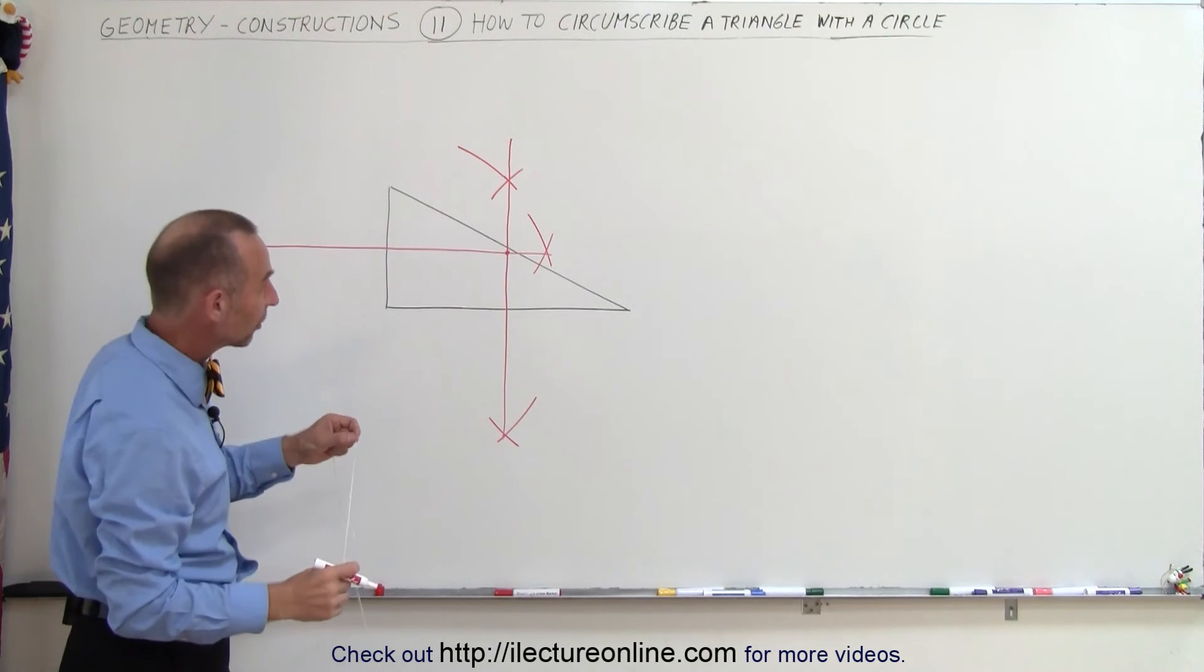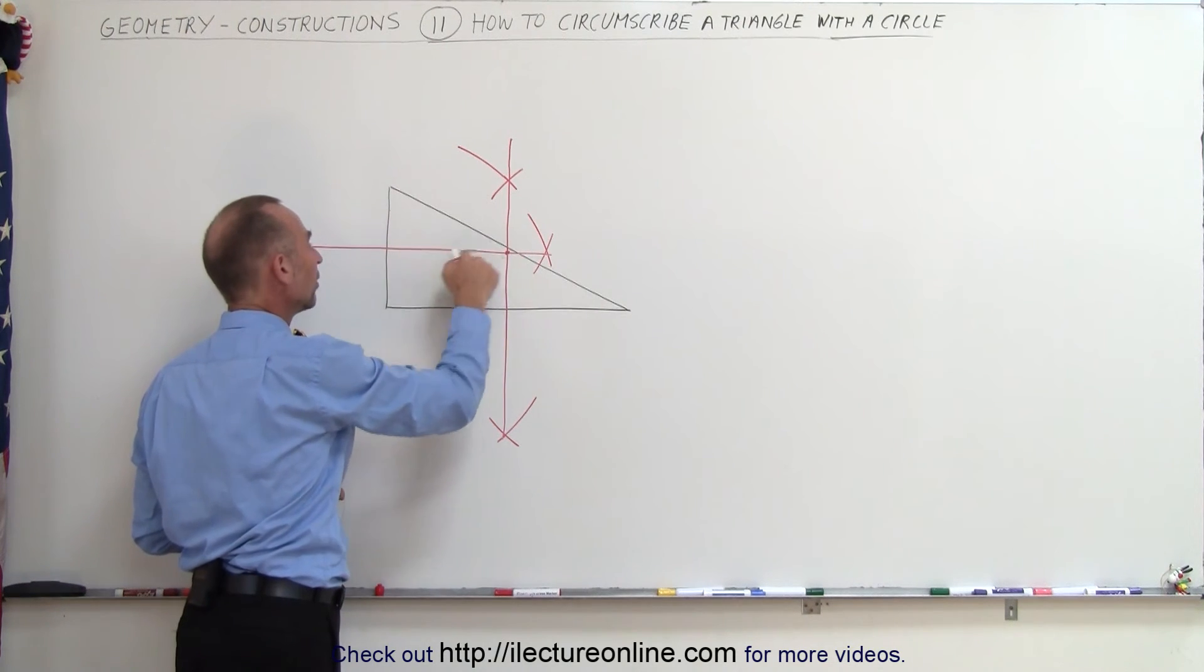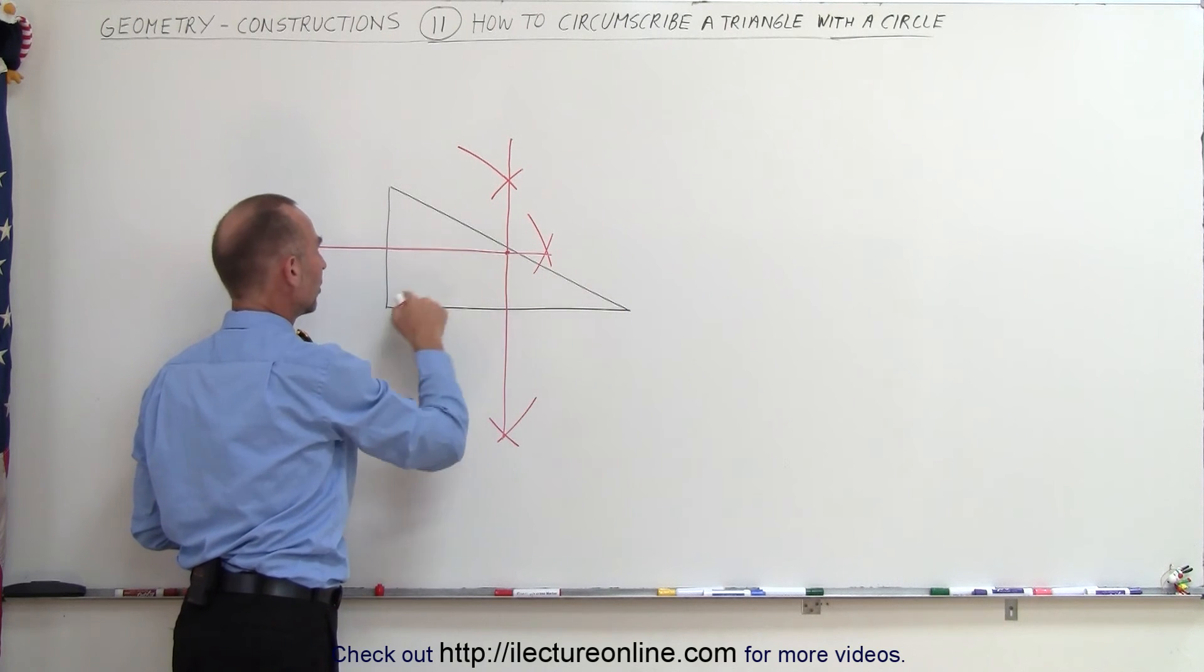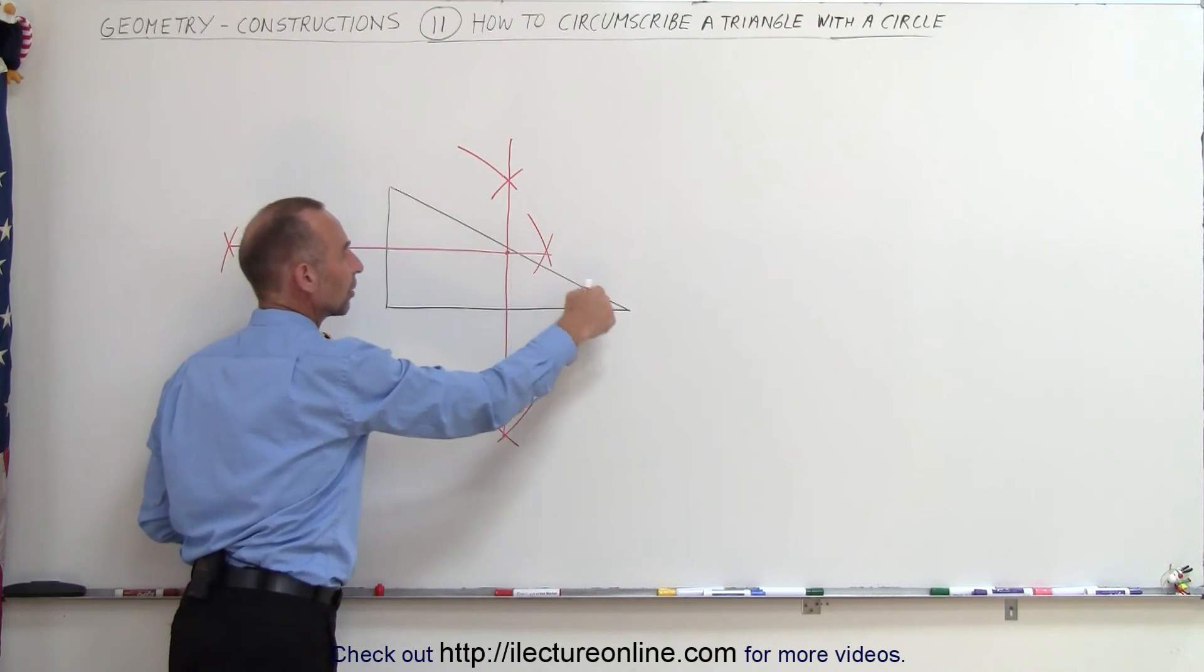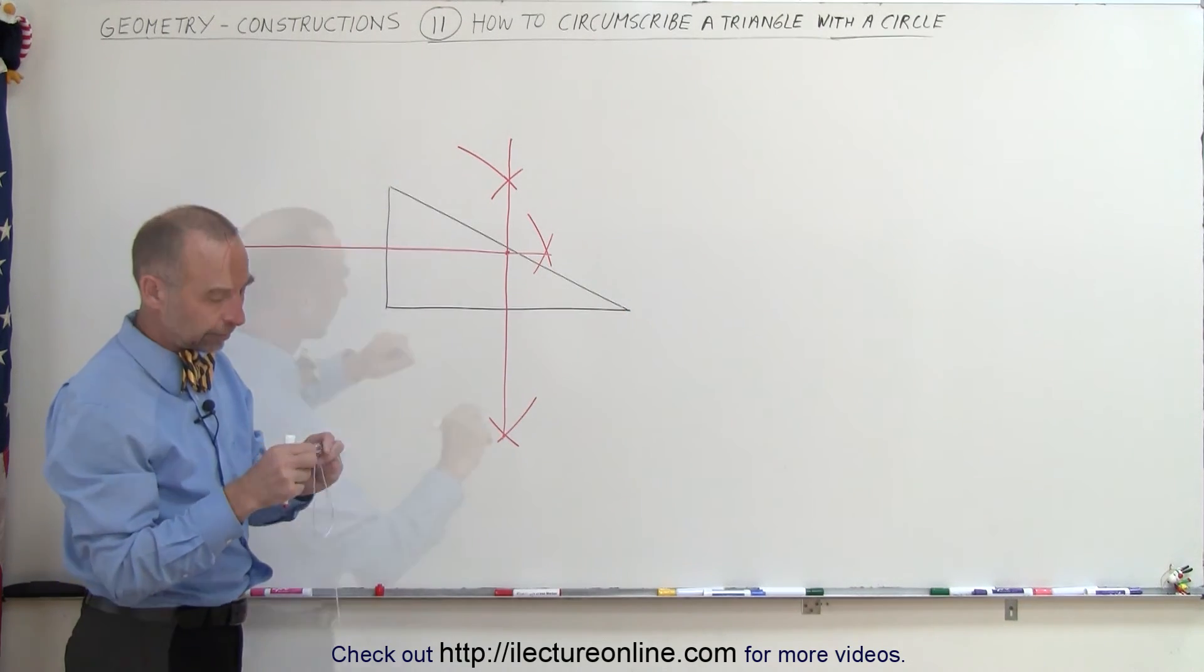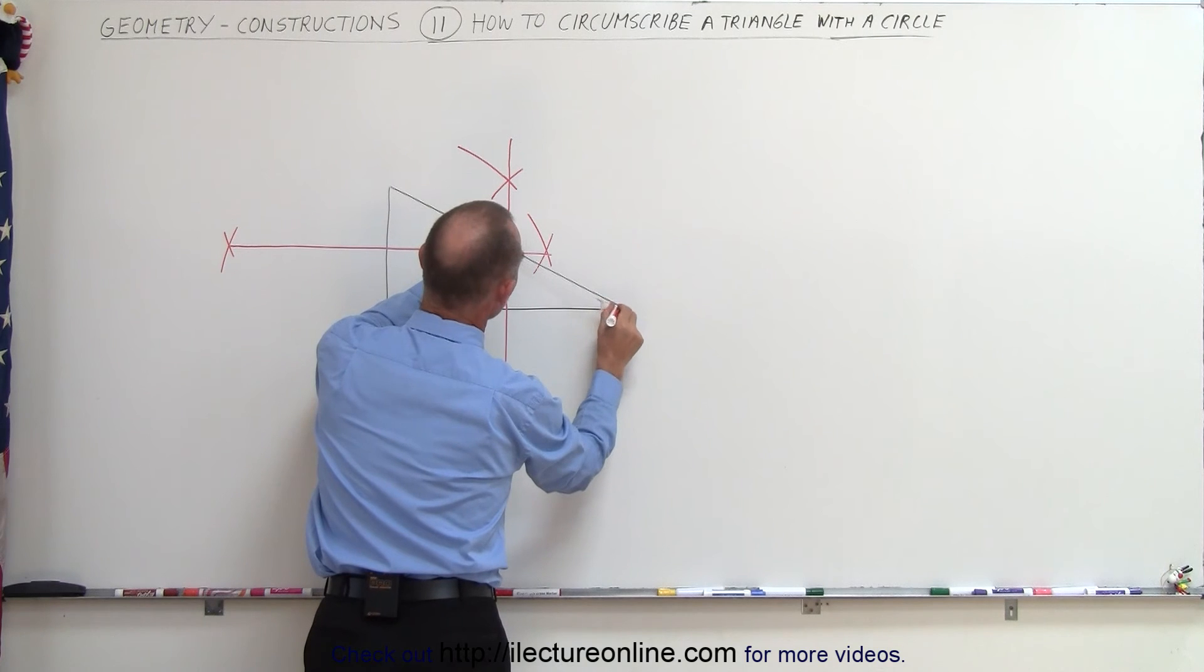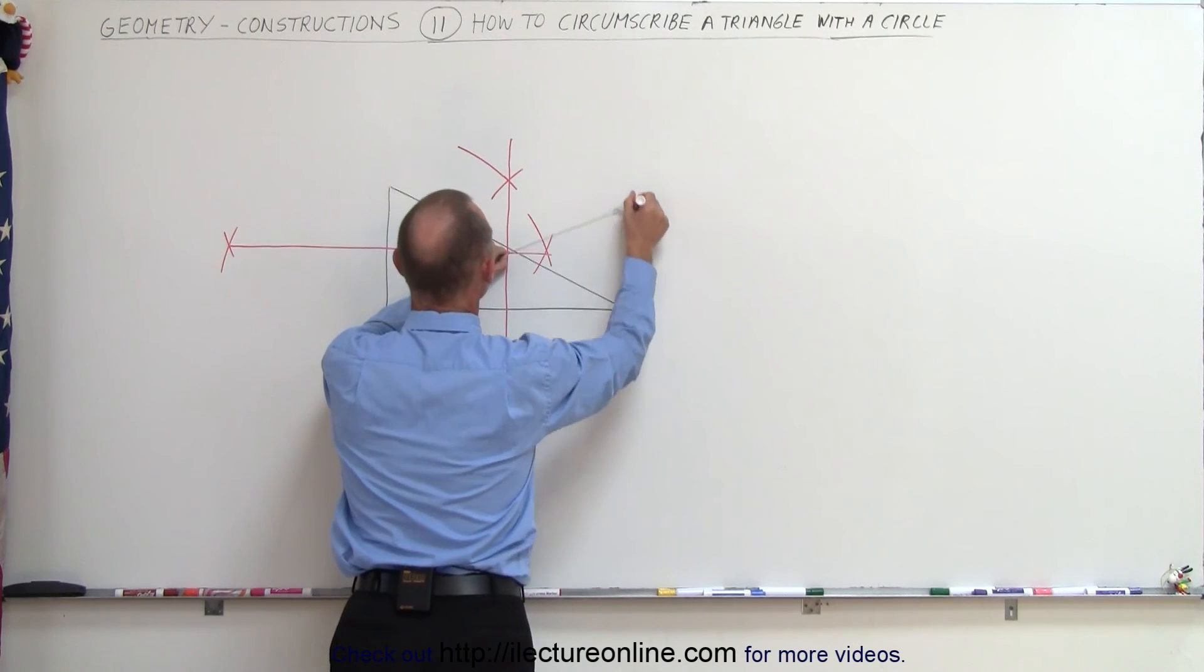If we now want to make a circle, we call this the center of the circle, and the radius will be the distance to any one of the three points. From there to there should be equal distance from there to there, which would be equal to there to there. Now grab your compass again, find the exact distance to the point, and draw the circle.